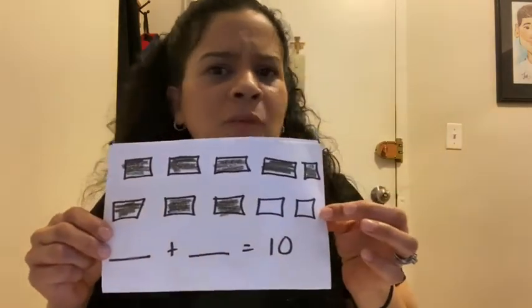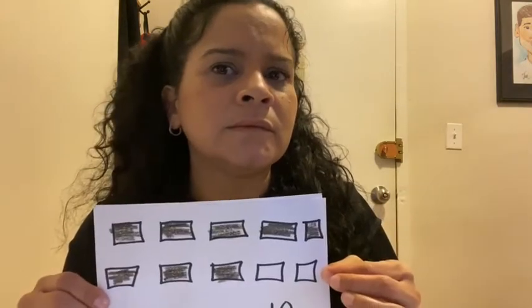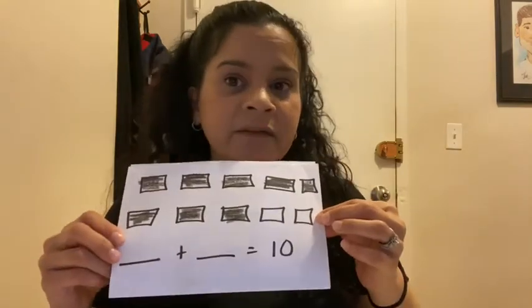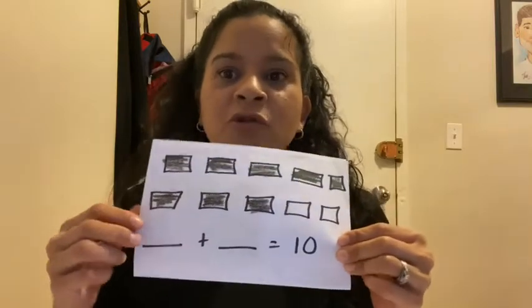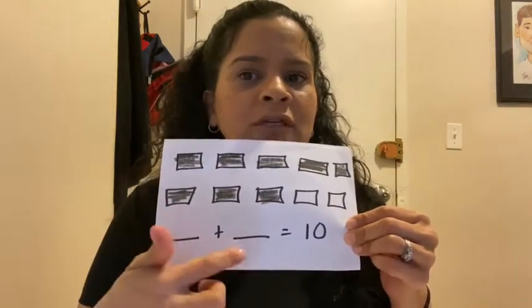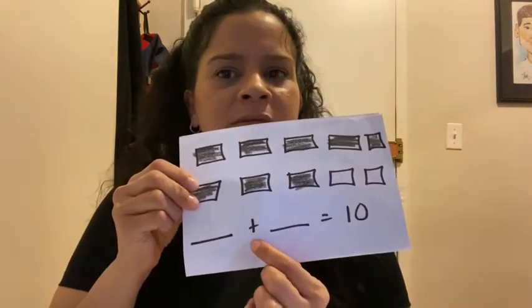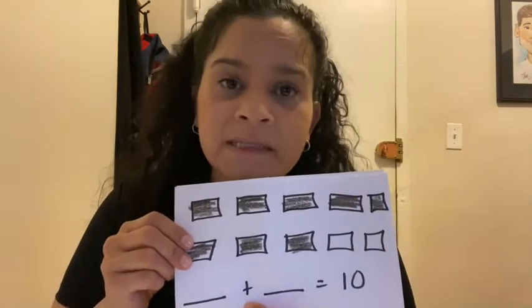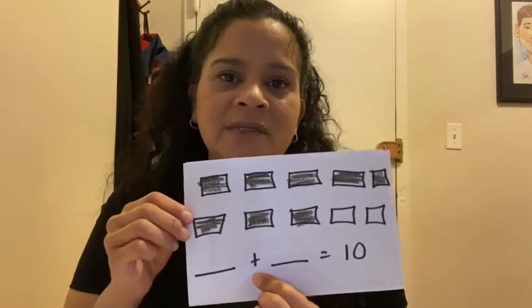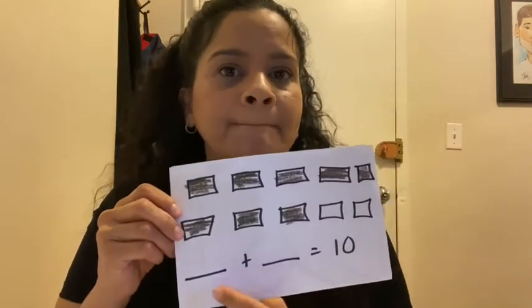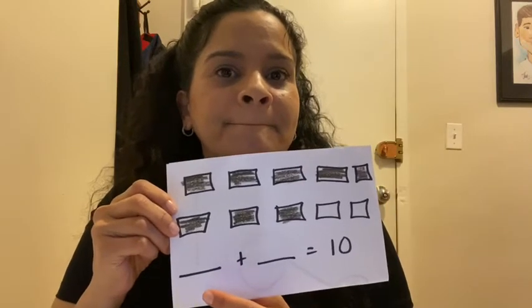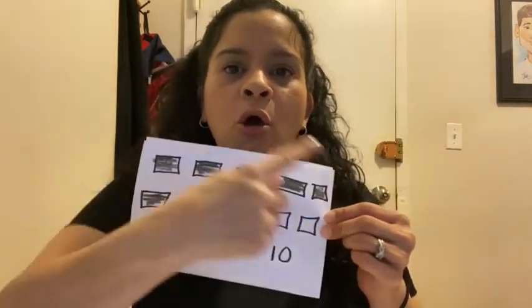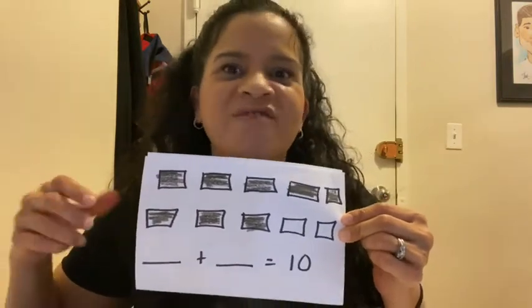What do the two circles we did not color in represent? If you said the two extra presents she received, you are correct. Now complete the number sentence. If you see a plus sign first in the number sentence, you know we are going to write in the parts of the number. And when you write the parts of the number, it's going to equal to the whole number.